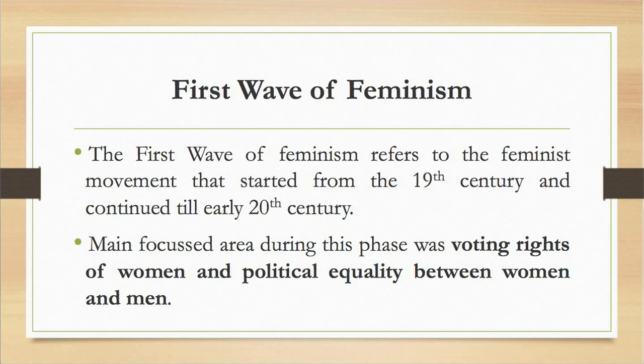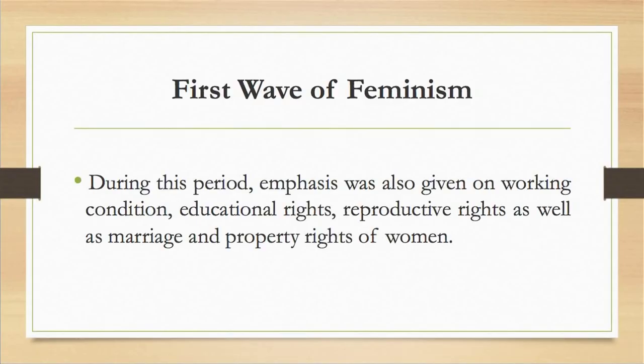During this phase, the feminist movement focused on the voting rights of women and political equality between men and women. This first wave of feminism emphasized the political rights of women. Emphasis was also given on working conditions, educational rights, reproductive rights, as well as marriage and property rights of women. The first women's rights convention was held in New York in the year 1848, where a Declaration of Sentiments was signed, outlining the grievances of women and setting the agenda for the women's rights movement.